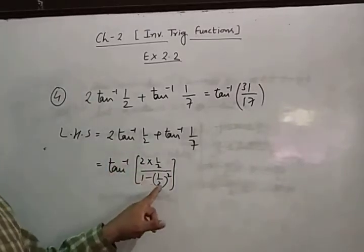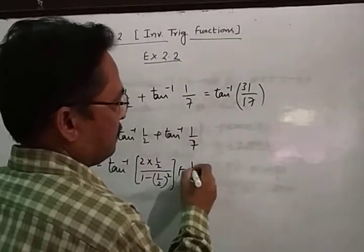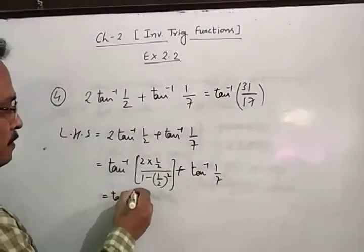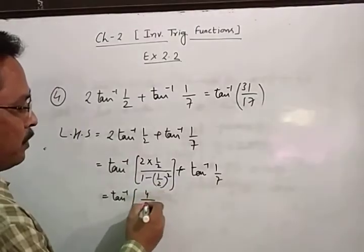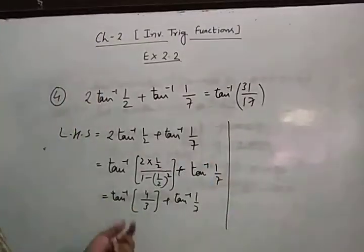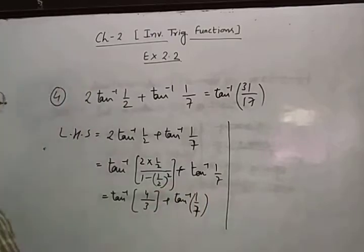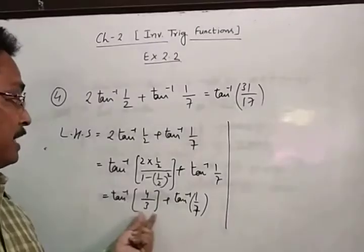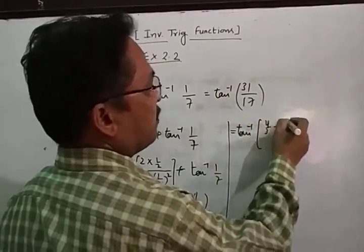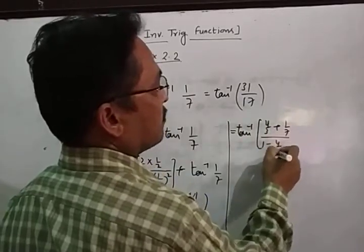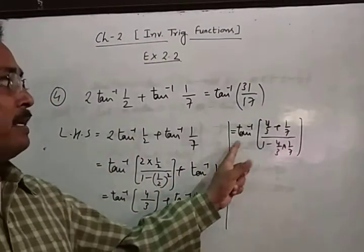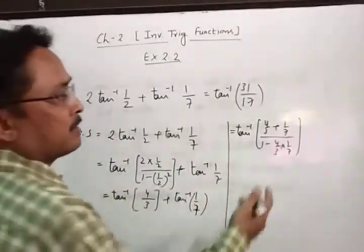We can write tan⁻¹(2x/(1−x²)) and the second term remains as is. After simplification, we get tan⁻¹(4/3) + tan⁻¹(1/7). Now, using the property tan⁻¹x + tan⁻¹y = tan⁻¹((x+y)/(1−xy)), when xy < 1.